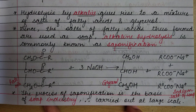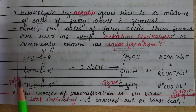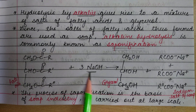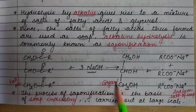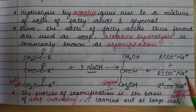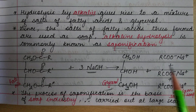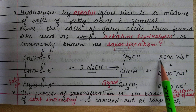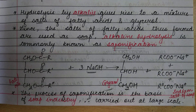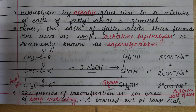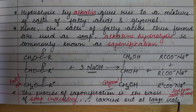Let us see how the reaction works. These are the fats or oils. When we add sodium hydroxide — an alkali — glycerol is formed along with a mixture of salts of fatty acids. Earlier, fatty acids (R-COOH) were formed; now, sodium salts of fatty acids are formed. The process of saponification is the basis of the soap industry and is therefore carried out at large scale.